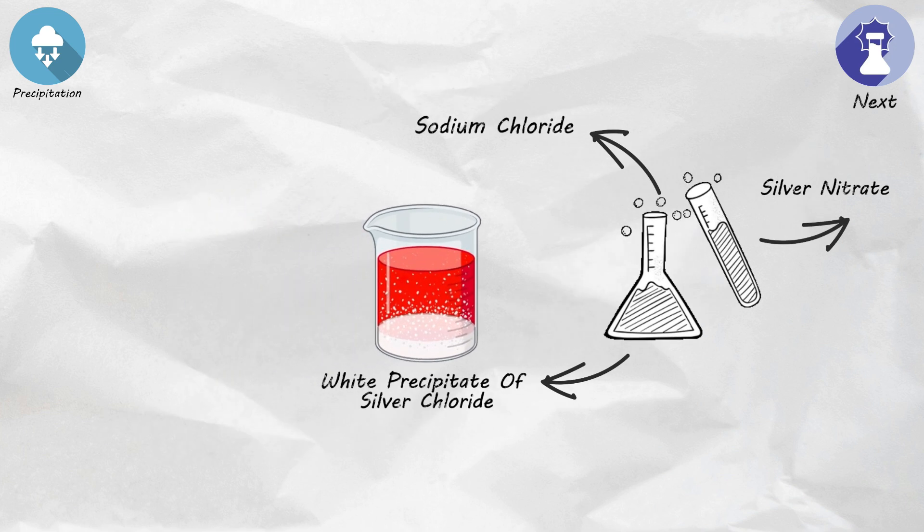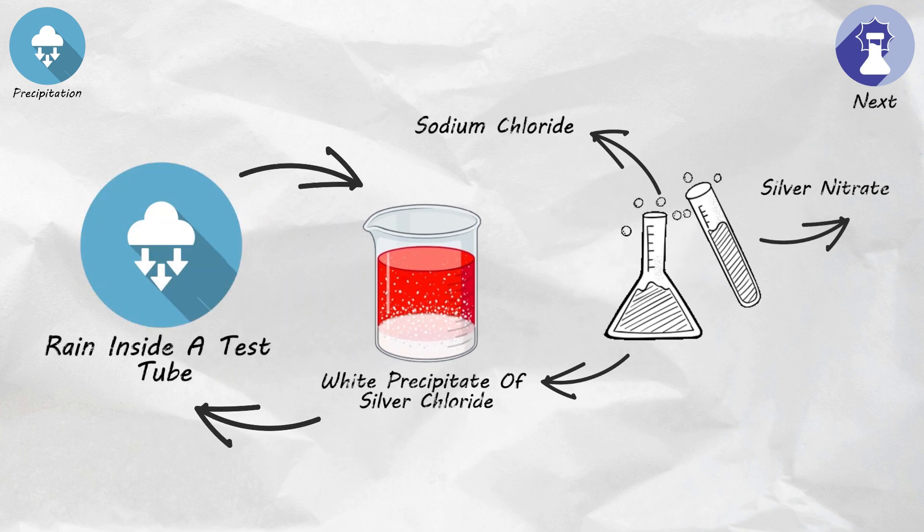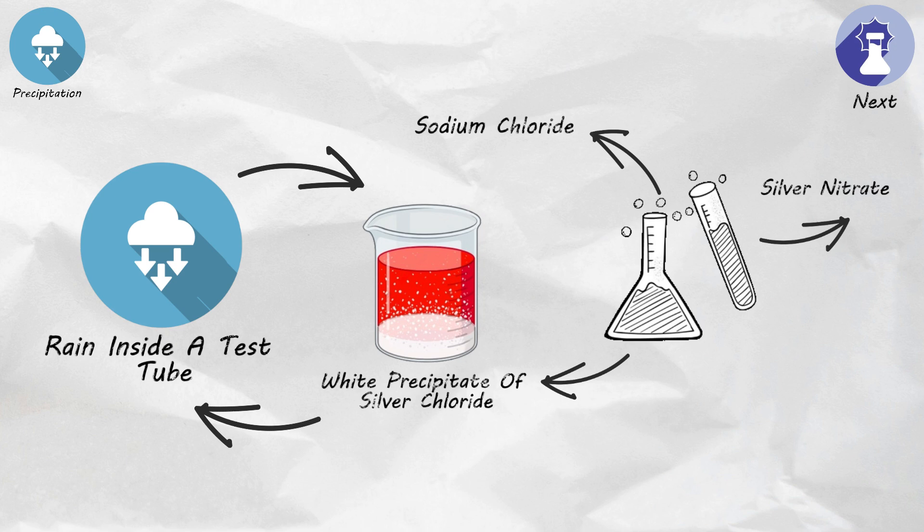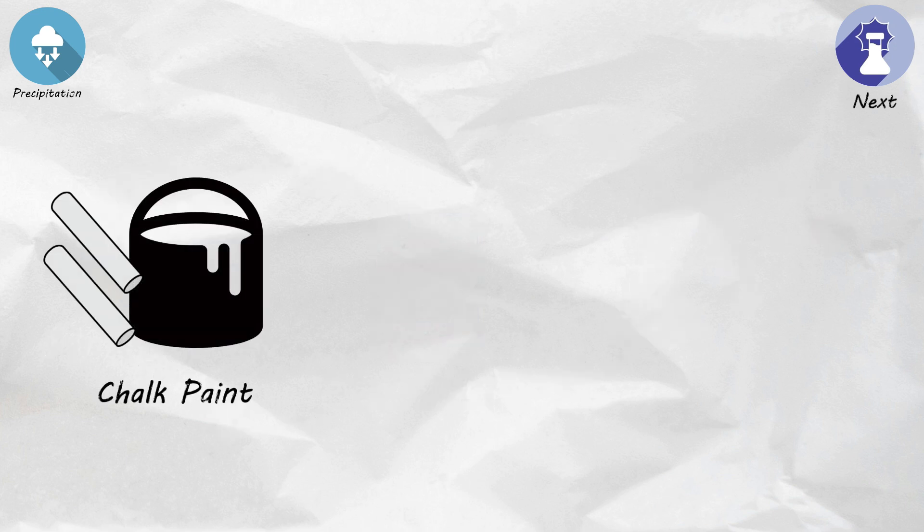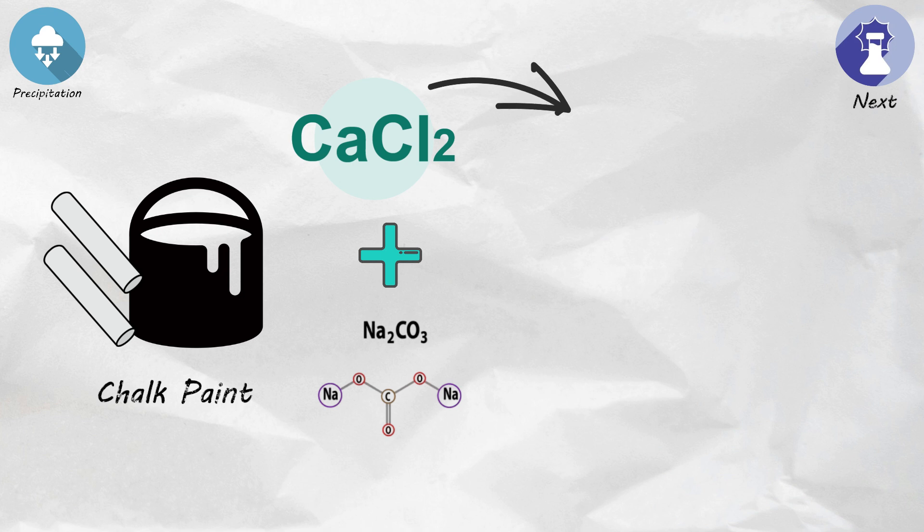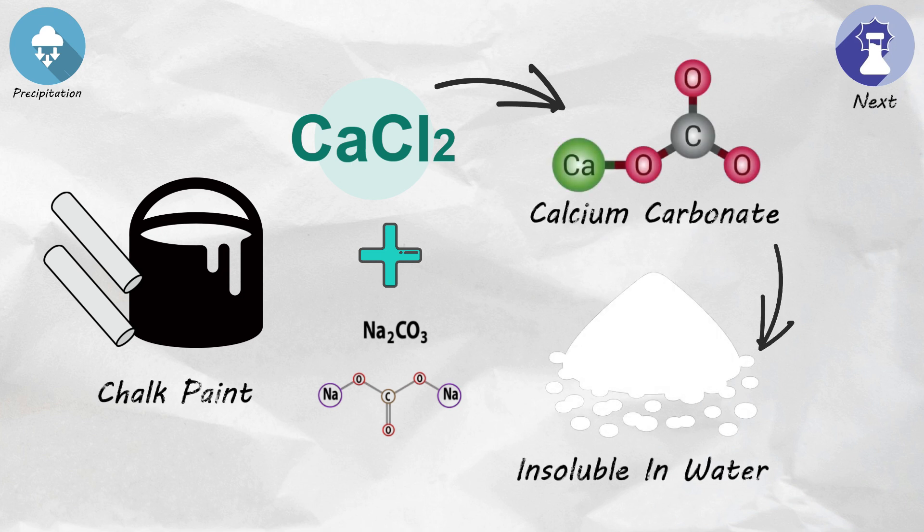It's like chemistry's way of making things rain inside a test tube, forming solid particles that settle out of the solution. You can make your own chalk paint knowing this. If you combine calcium chloride and mix it with a solution of sodium carbonate, Na2CO3, they react to form calcium carbonate, CaCO3, which is insoluble in water and precipitates out as a fine white solid.